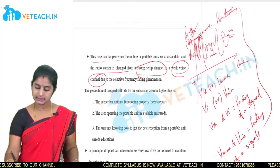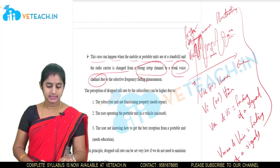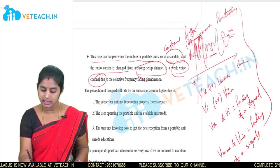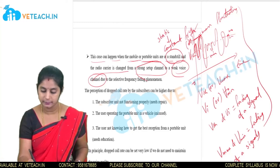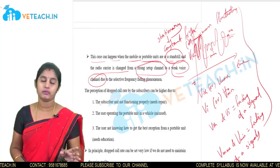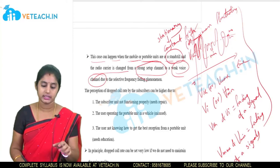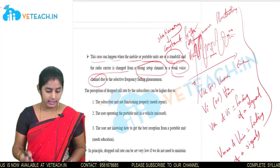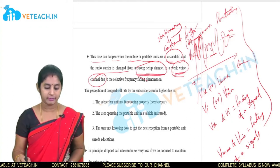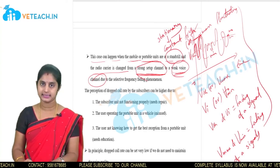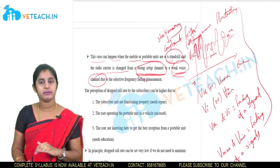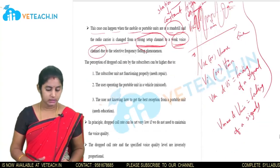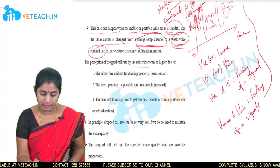This fading concept was discussed in previous units. This case can happen when mobile or portable units are at a standstill — meaning stationary, fixed at a position — and the radio carrier is changed from a strong setup channel to weak setup channels due to the selective frequency fading mechanism, causing signal variation.